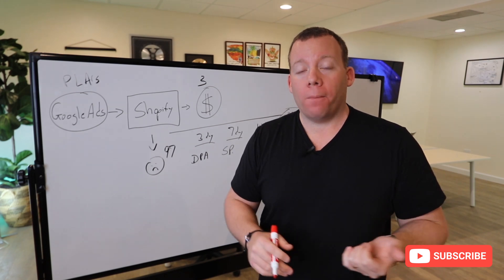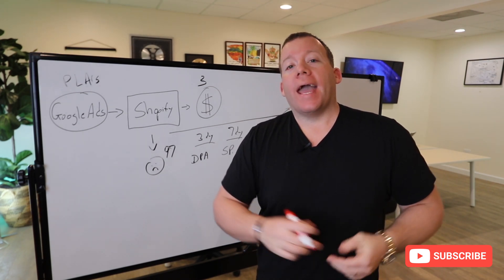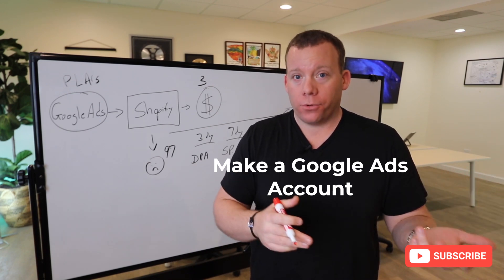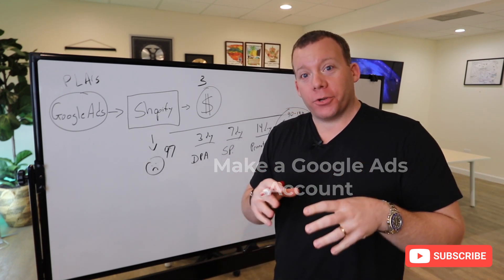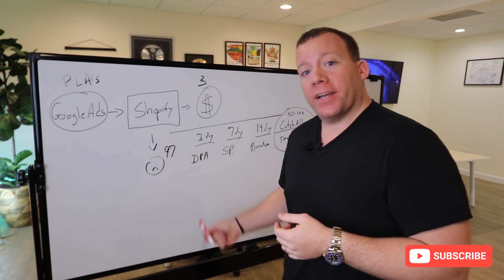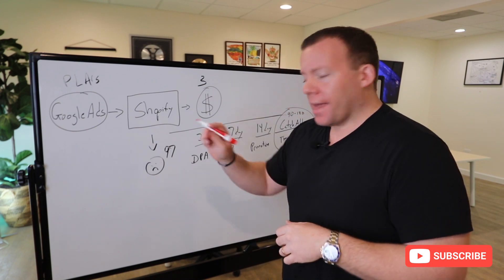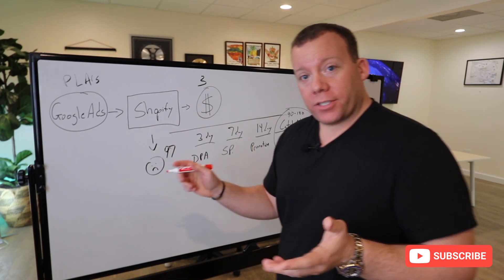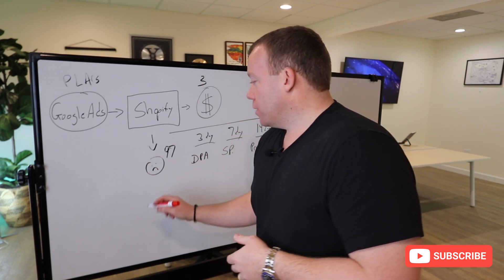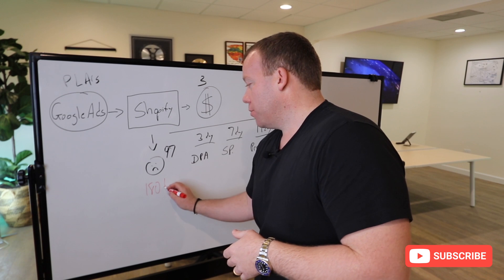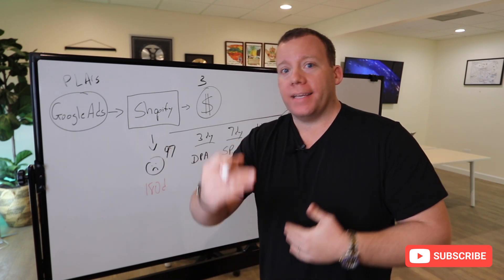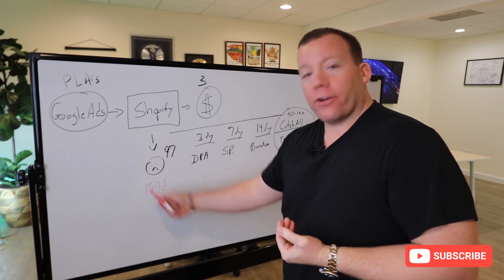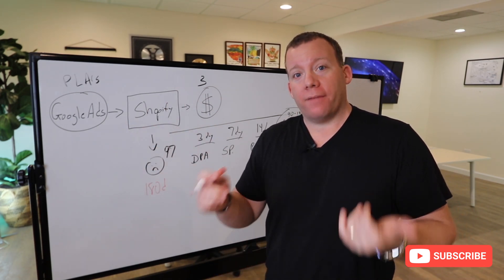YouTube is owned by Google. In order to run ads on YouTube, the first thing you have to do is make a Google Ads account. Once you have one, inside Google Ads you can create audiences — very similar to how we create them on Facebook, just a little different. With people that visit our website, inside Google Ads we make an audience of all website visitors — a 180-day visitor list. That audience, just like with Facebook, is constantly being replenished. As people reach the end of it, they go out; if somebody visits our website today, they go in. So it's an auto-updating, dynamic list of people that have visited our website.